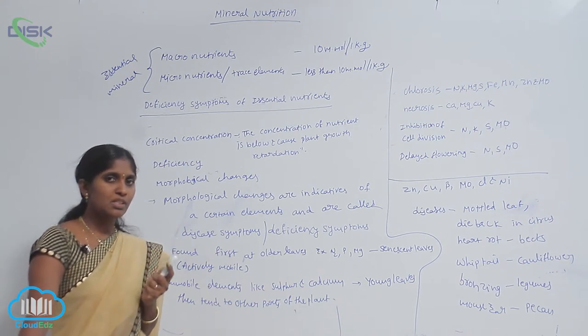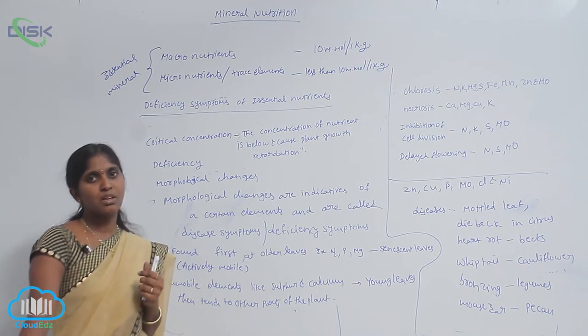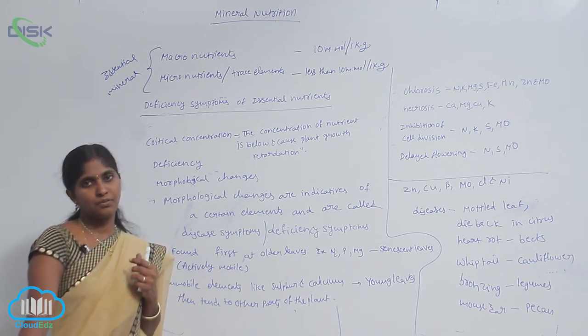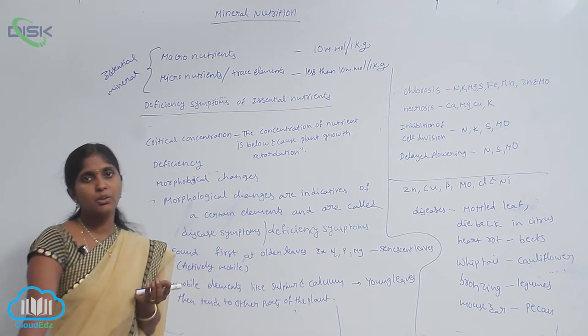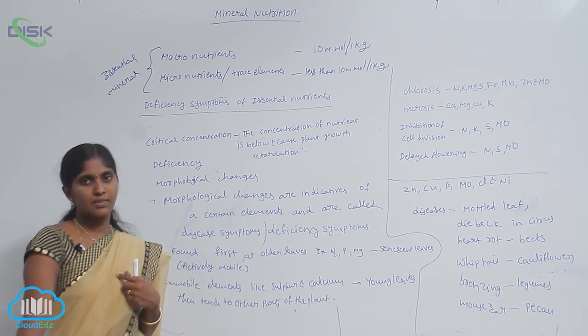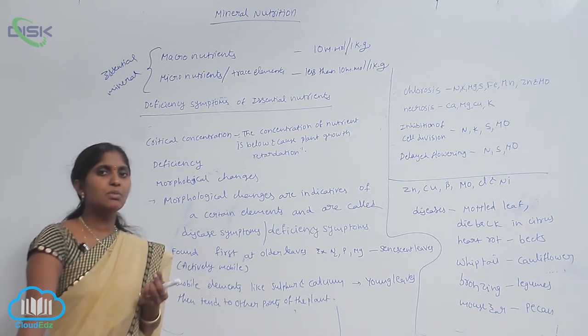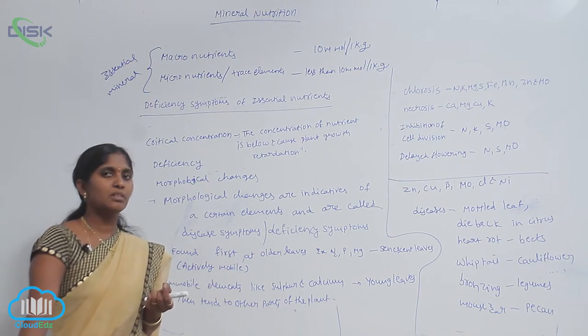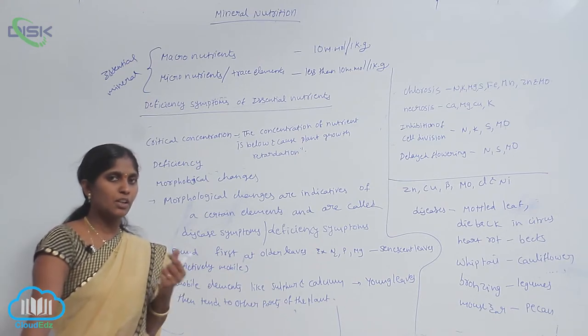Immobile nutrients show the deficiency symptoms on younger leaves at first, then only tend to older leaves. What are the symptoms given by the deficiency of elements?